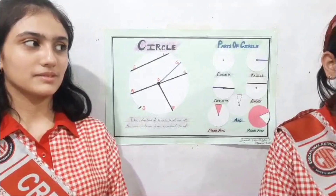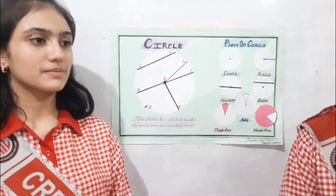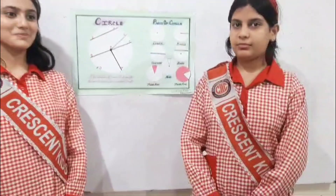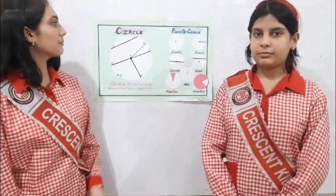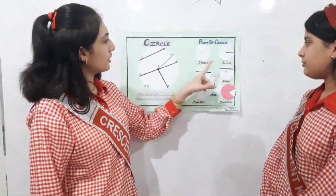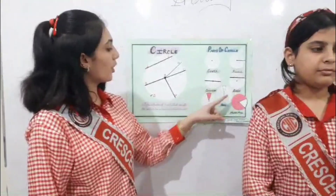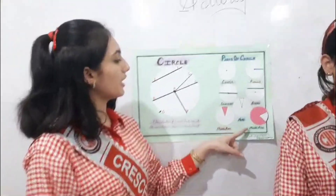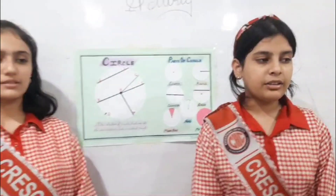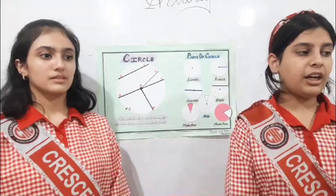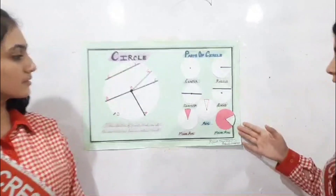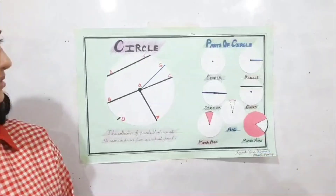Parts of a circle. Parts of a circle include: center, radius, diameter, chord, minor arc, and major arc. Today we are going to describe the parts of a circle which is already presented on the chart.